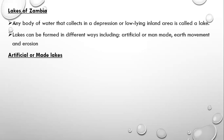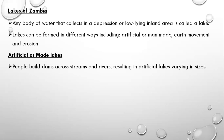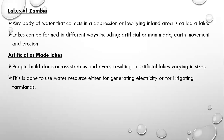Artificial or man-made lakes are lakes which people build. People build dams across streams and rivers, resulting in artificial lakes of varying sizes. This is done to use water resources either for generating electricity or for irrigating farmlands.